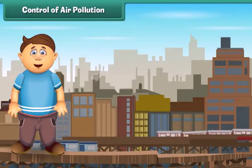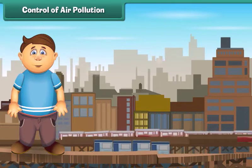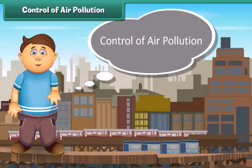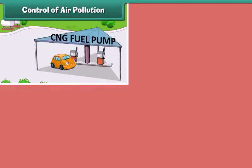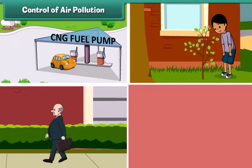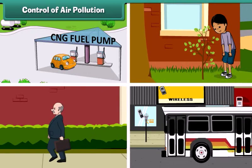Now the question is, how can we control air pollution? There are many things that we can do. It can be controlled by using clean fuels such as CNG in vehicles and industries, planting new young plants, preferring walking over driving, and using public transport for transportation.